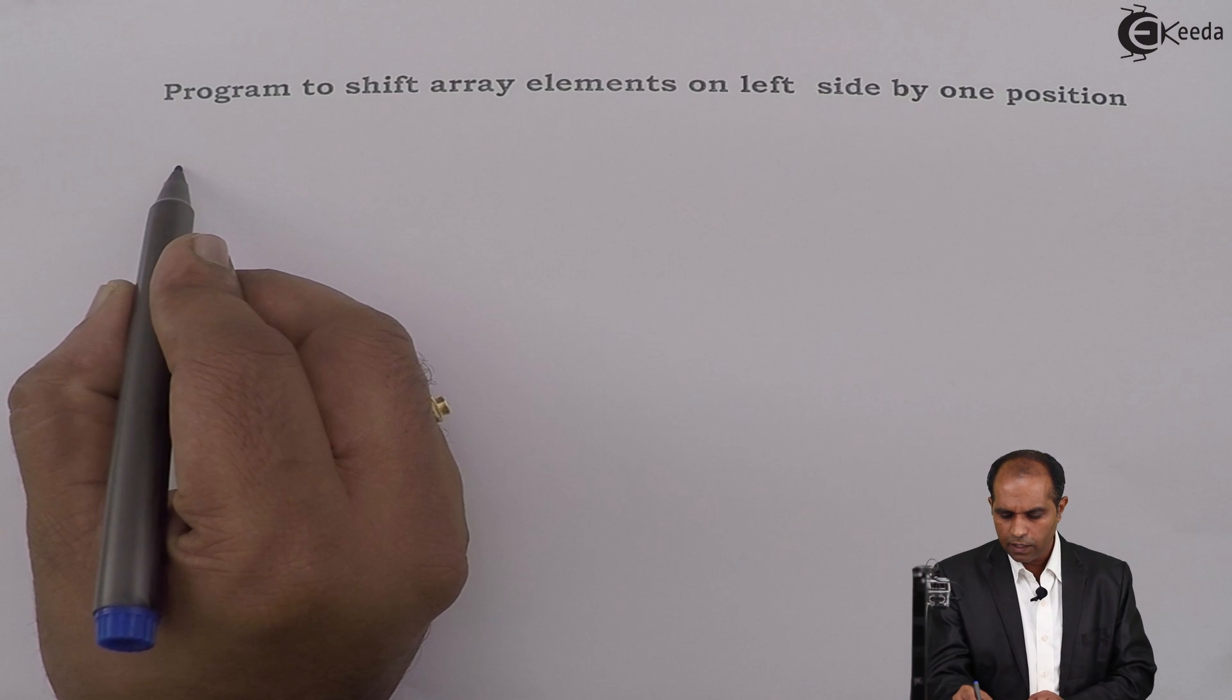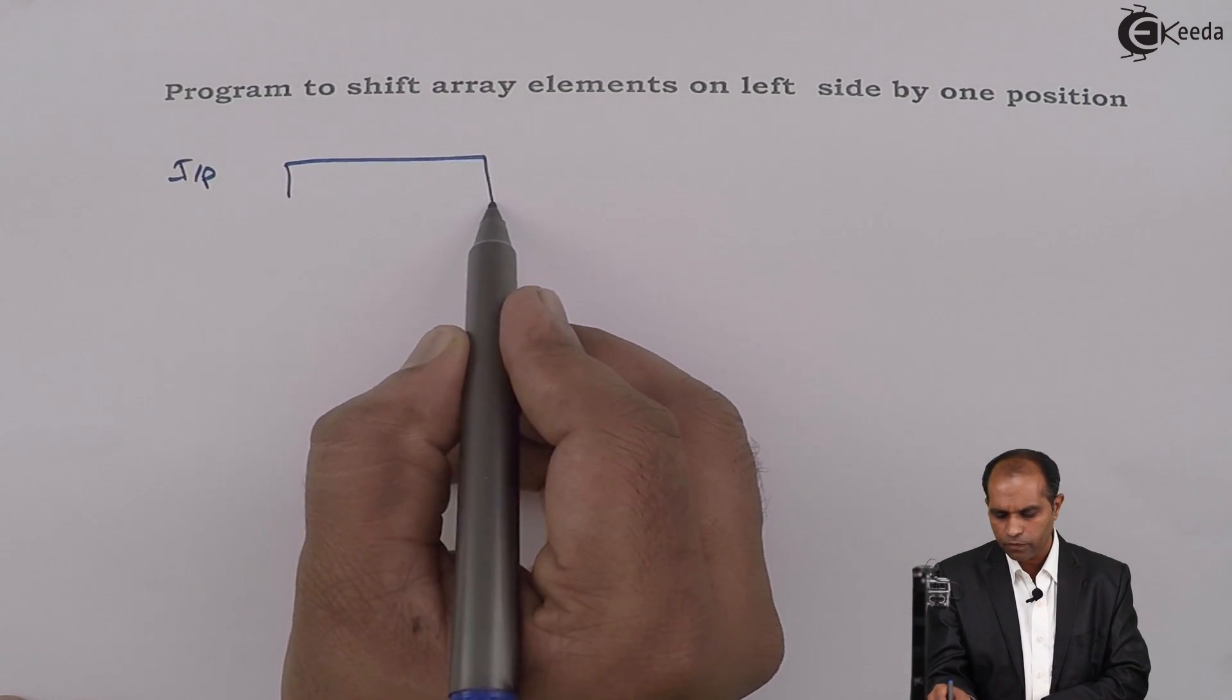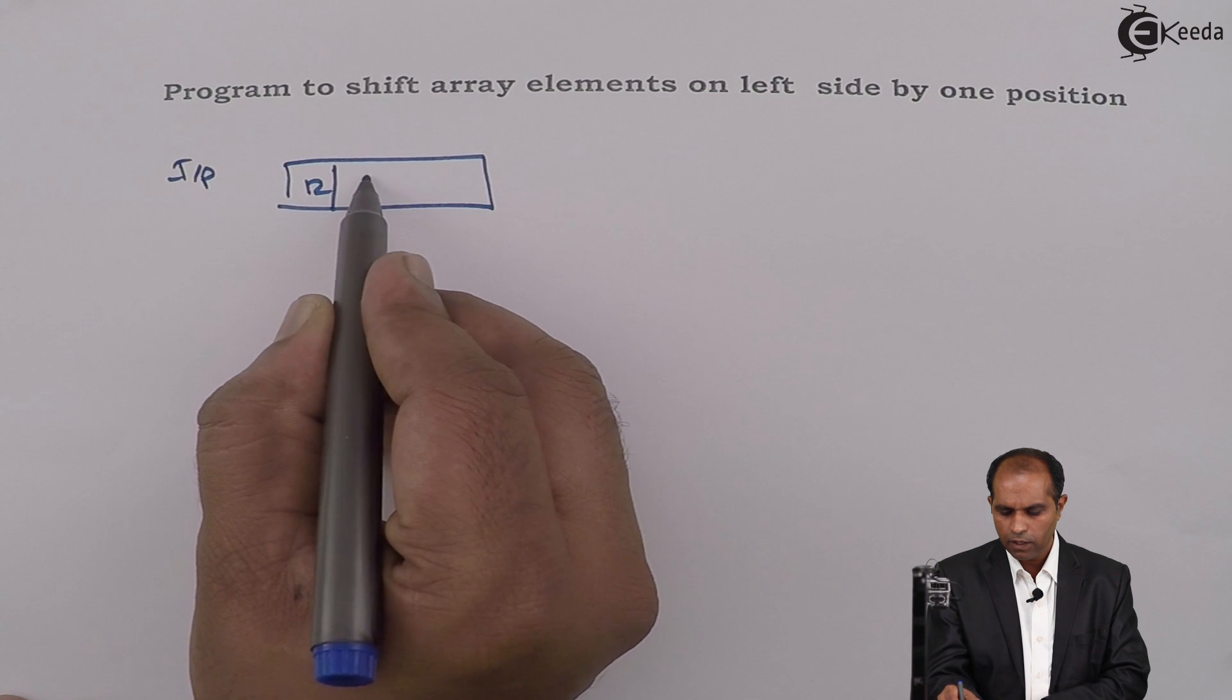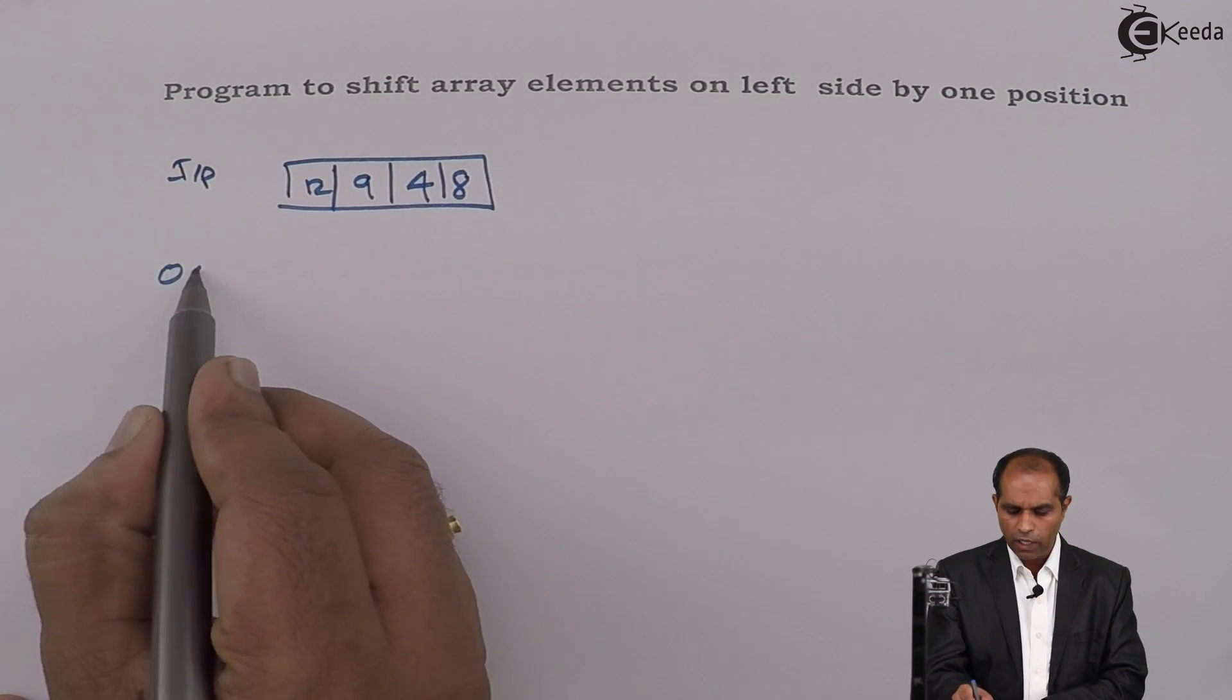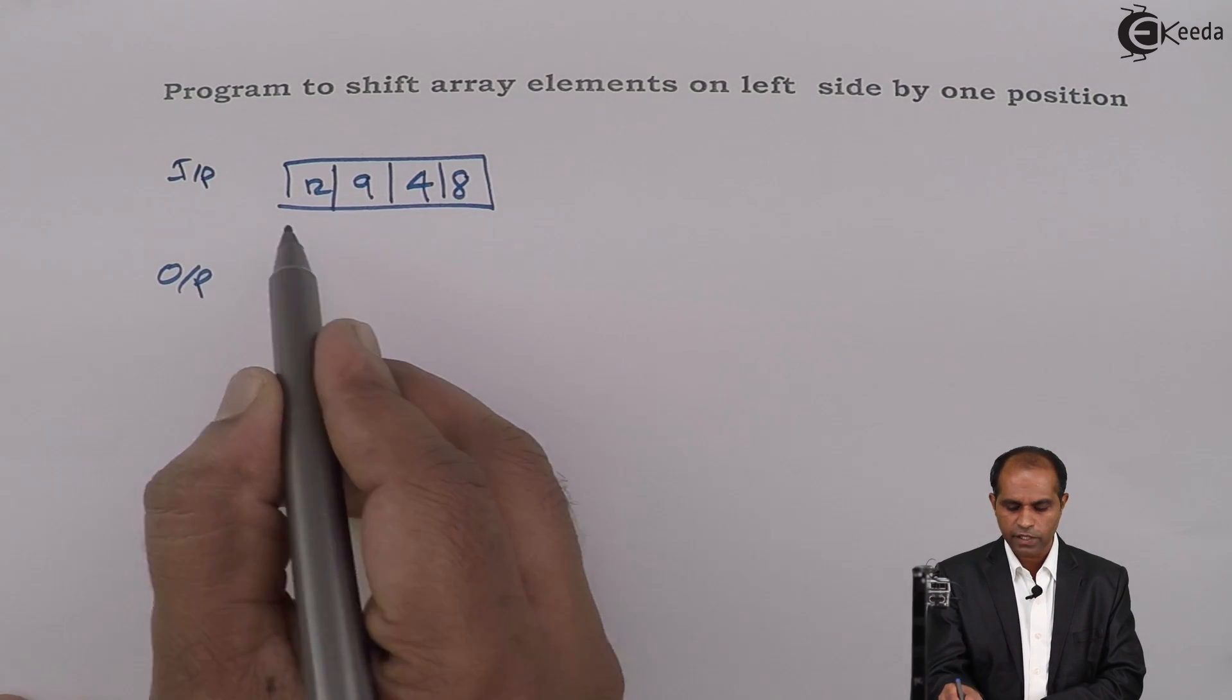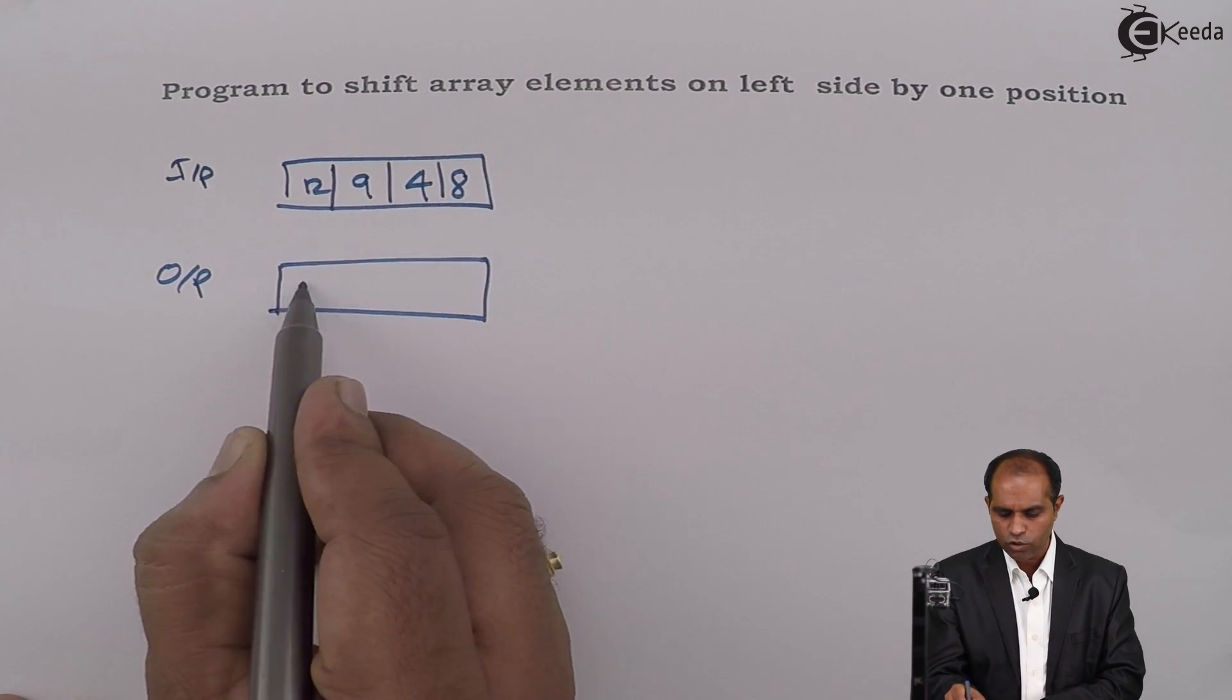Suppose if I say that I have an input array in this fashion: say 12, 9, 4, and 8. The output array has to be shifting towards left-hand side.